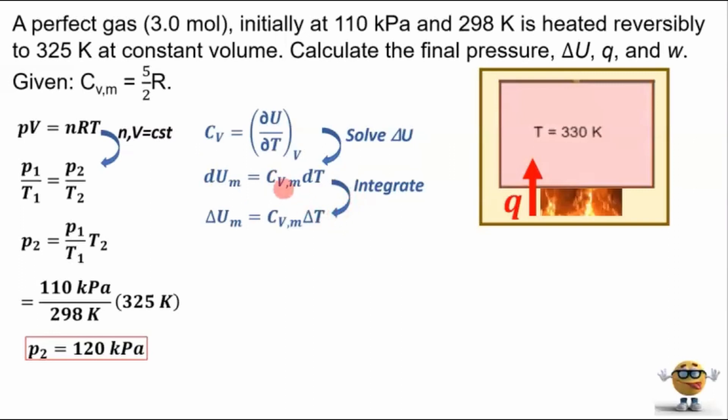So at this point, we can integrate the molar heat capacity as constant because there's no T in here. It doesn't depend on T in the equation we're given. So it gets yanked out of the integral, and we just have the integral of dT, which is the change in T. Integral of du_m is the change in internal energy, molar internal energy.